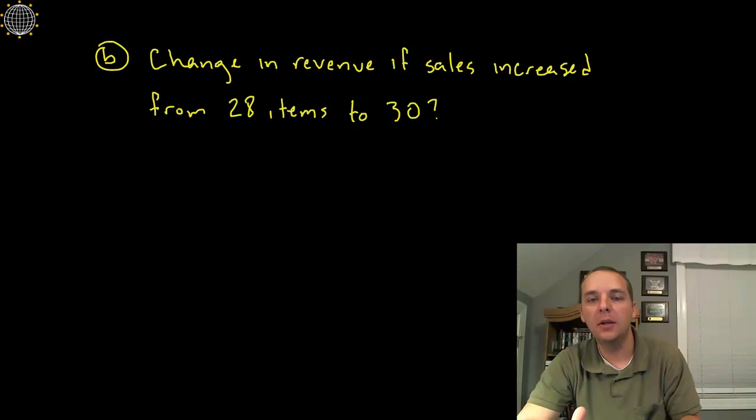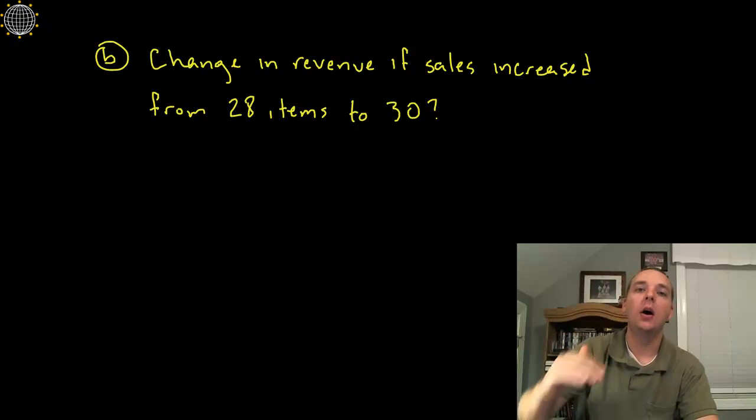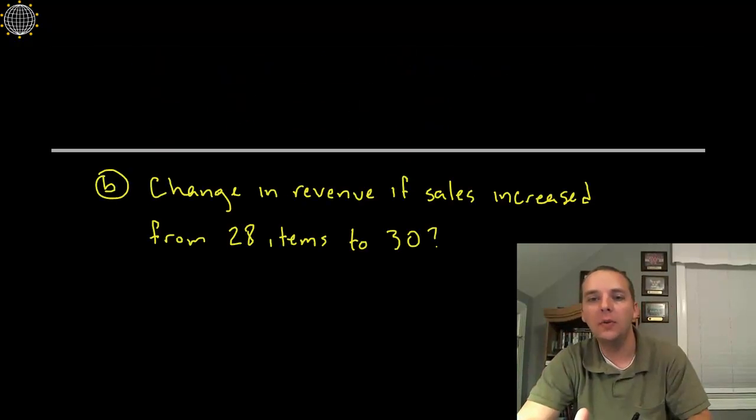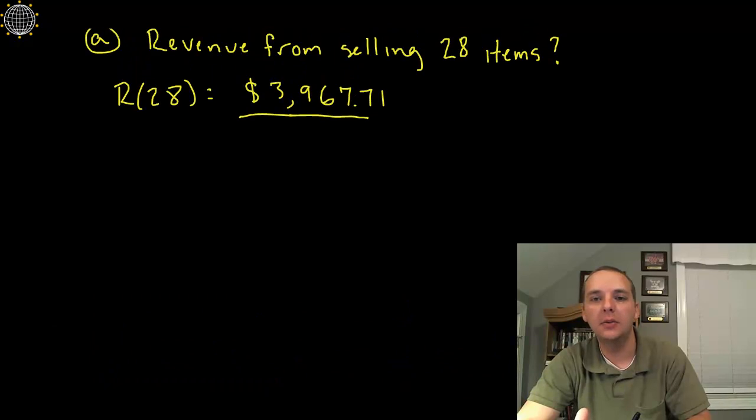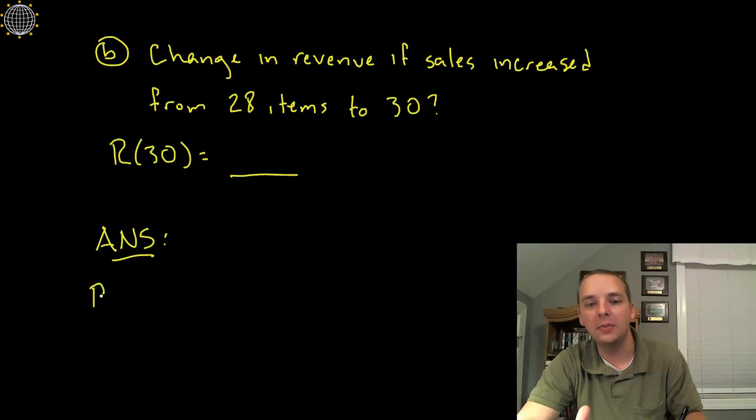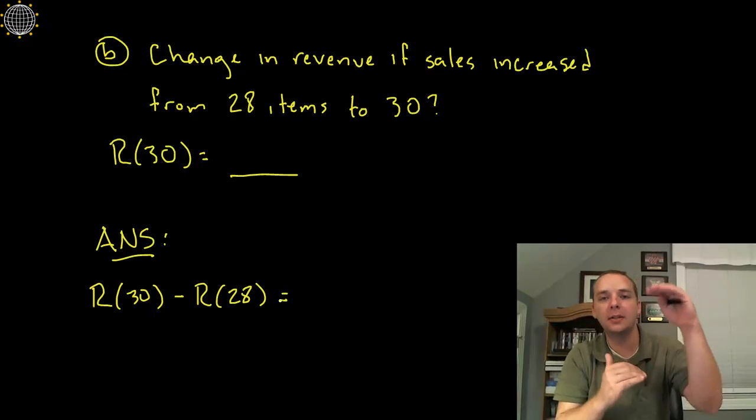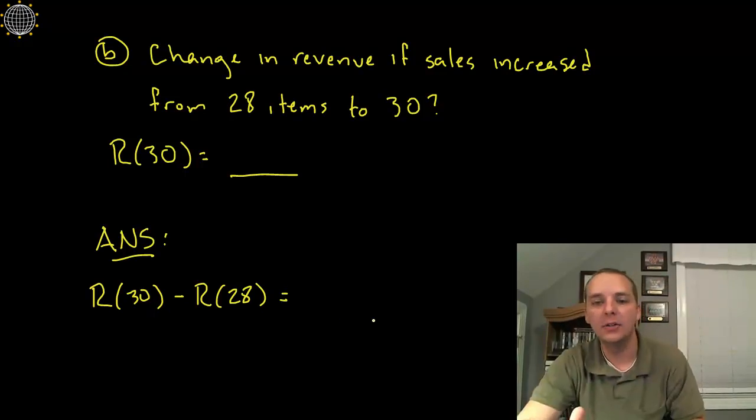Okay, here's a part B. Now we're getting into the change in revenue. Here we go. What's the change in revenue if the sales increase from 28 items sold up to 30 items sold? Well, we know the revenue of selling 28 items was $3,967.71. To get this change in revenue we would also need the revenue if we sold 30 items, which we'll find in just a second, but really this answer is not that quantity, it would actually be the revenue for selling all 30 items minus the revenue of selling just the 28 items, and that would give you the difference, that's the change, or the actual change in revenue.